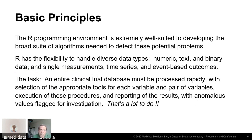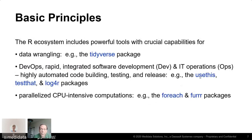What we need to do is take an entire clinical trial database, process it quickly, select the appropriate tools for each variable and each pair of variables, execute the procedures, report the results, and flag anomalous results for investigation. R includes powerful tools for crucial capabilities: data wrangling with tidyverse, DevOps with integrated software development and IT operations using usethis, testthat, and logr for R, and parallelized CPU-intensive computations using foreach and parallel packages.